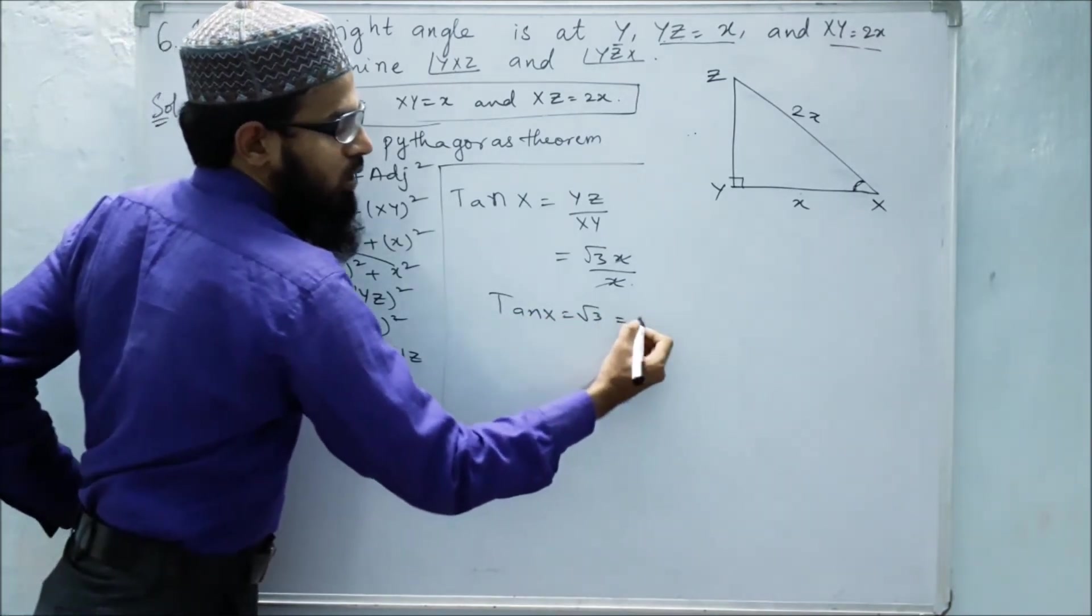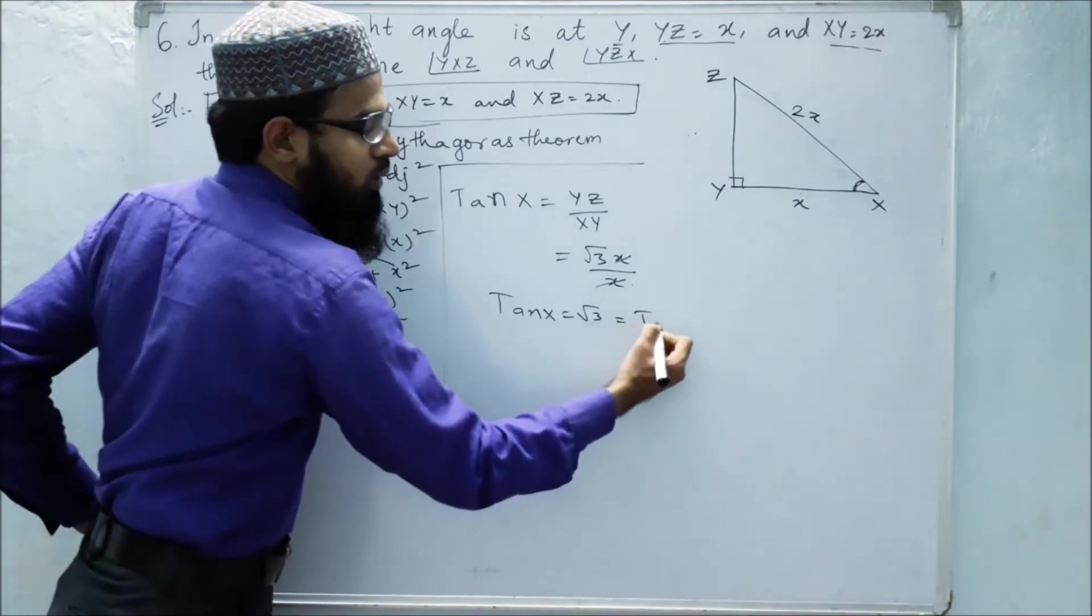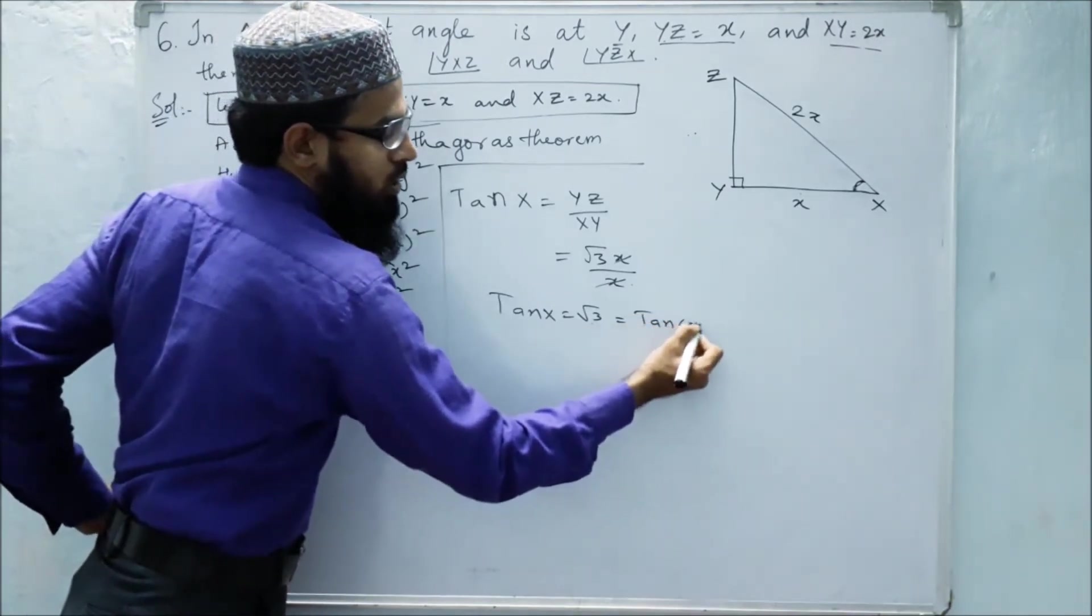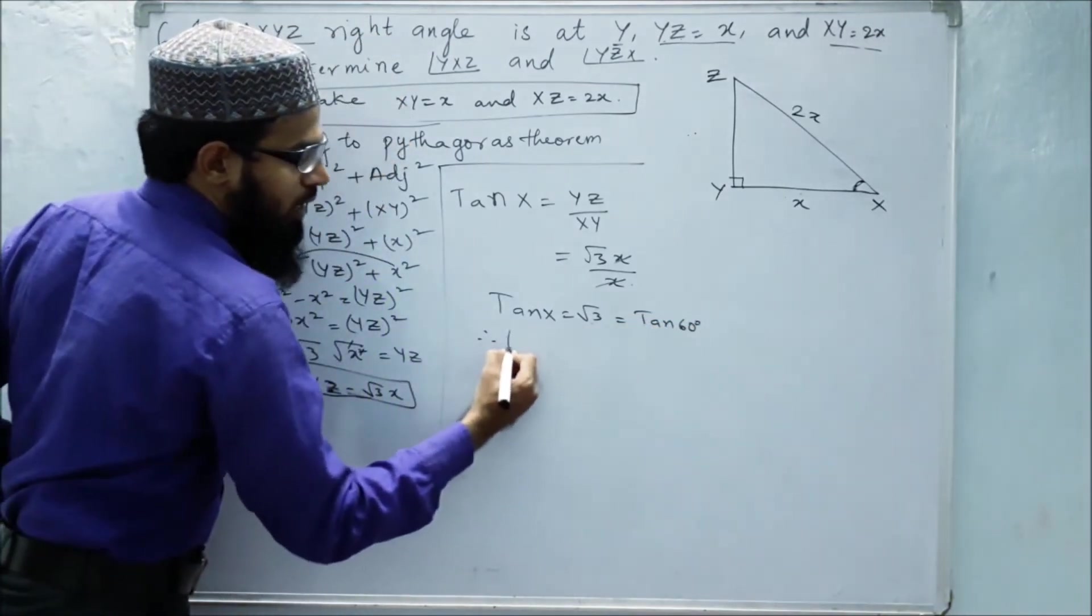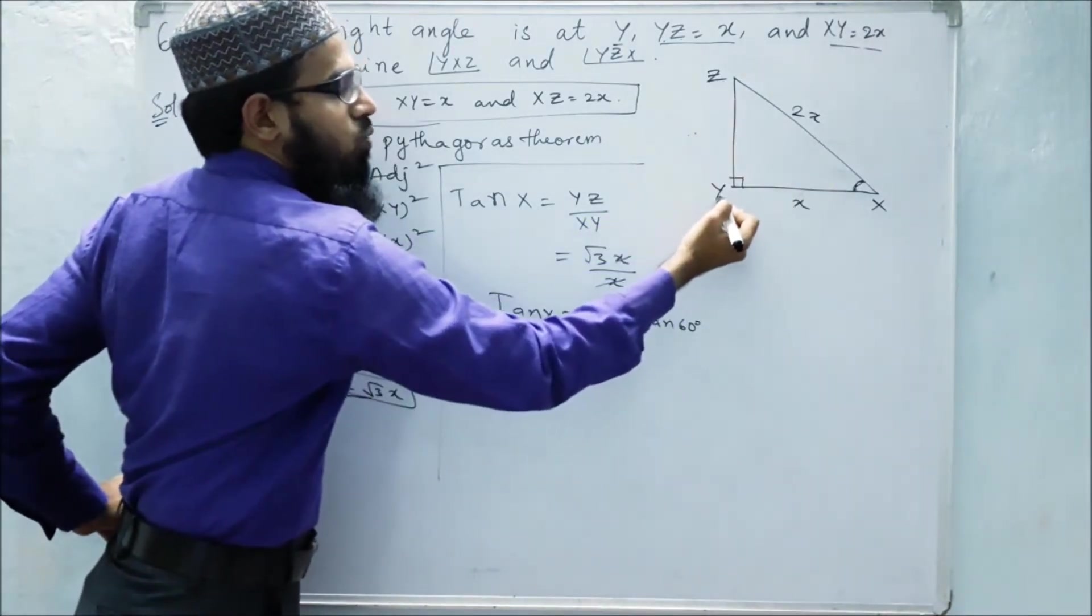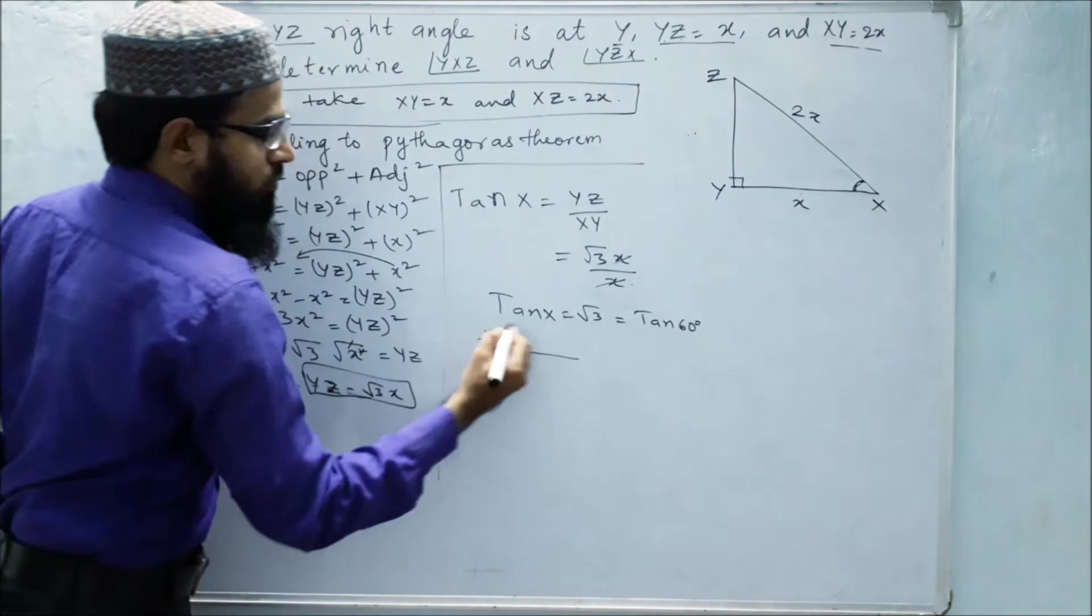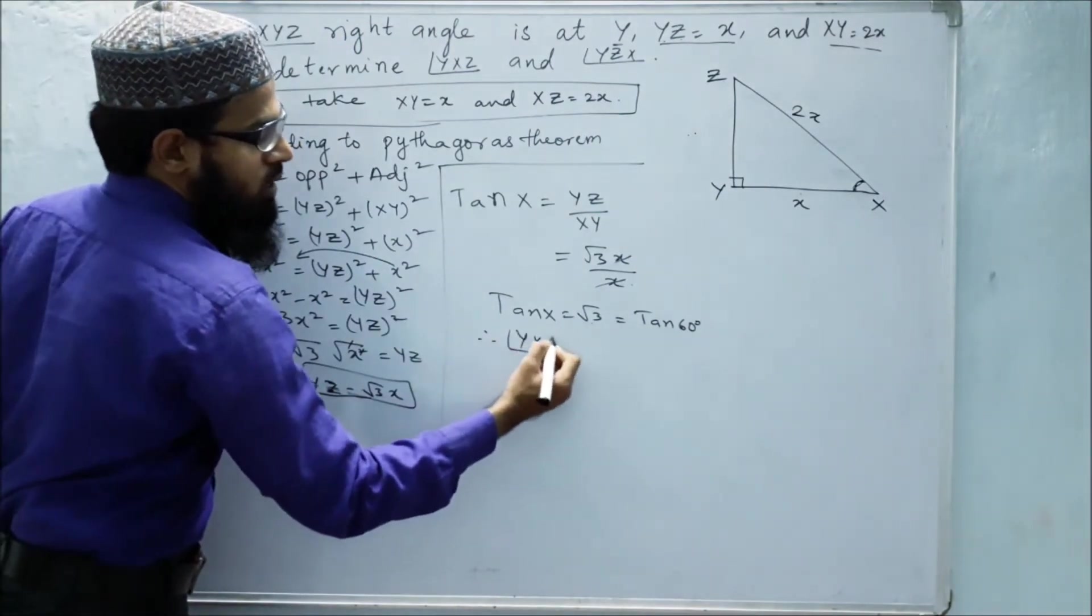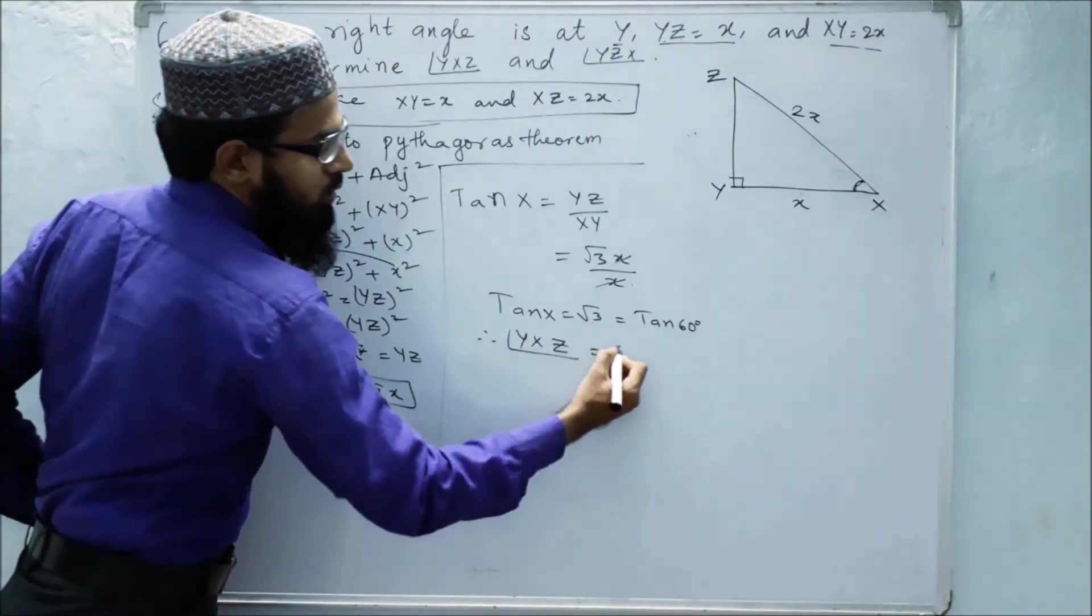When do we get root 3? When the tan is 60 degrees. So therefore, angle YXZ is 60 degrees.